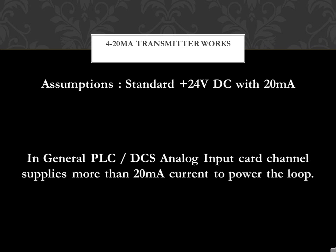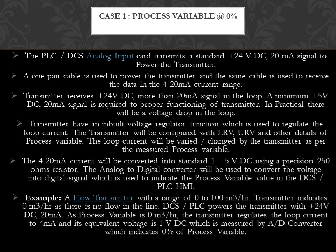4-20mA transmitter operation — Assumptions: standard +24VDC with 20mA. In general, the PLC/DCS analog input card channel supplies more than 20mA of current to power the loop. Case 1: process variable at 0%. The PLC/DCS analog input card transmits a standard +24VDC, 20mA signal to power the transmitter. A one-pair cable is used to power the transmitter and the same cable is used to receive the data in the 4-20mA current range. A minimum +5VDC, 20mA signal is required for proper functioning of the transmitter. In practice, there will be a voltage drop in the loop.